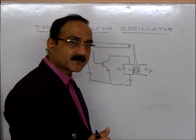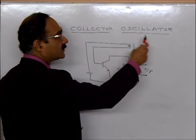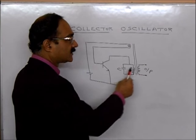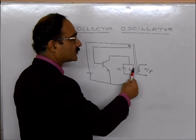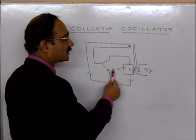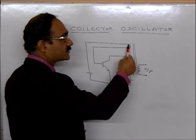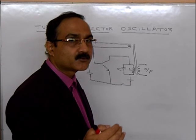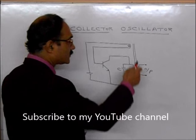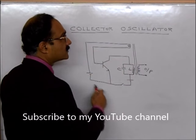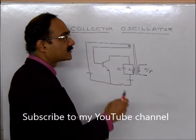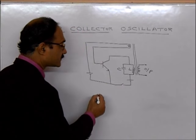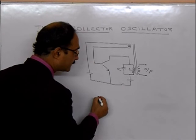In a tuned collector oscillator, we have a transistor amplifier, a tuned circuit connected to the collector, and we use inductive coupling — that is, the principle of mutual induction. This is the tuned collector oscillator in brief, and it produces a wave with constant amplitude.